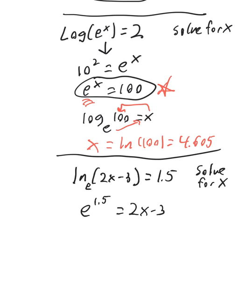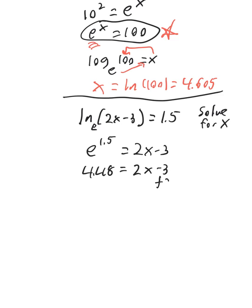So, we want to take e to the 1.5 and see what we get there. And that comes out to be 4.48 is equal to 2x minus 3. Then add 3 to both sides. That'll be 7.48 is equal to 2x. And then divide both sides by 2. And 7.48 divided by 2 is 3.74. So, x will be approximately 3.74.